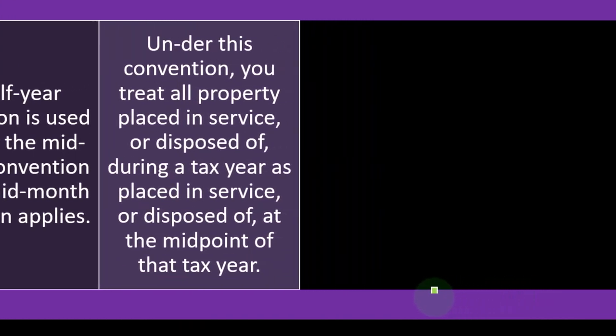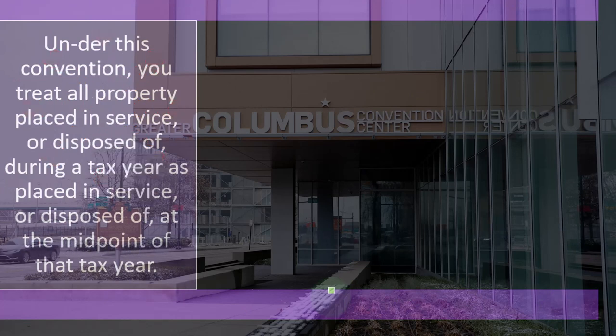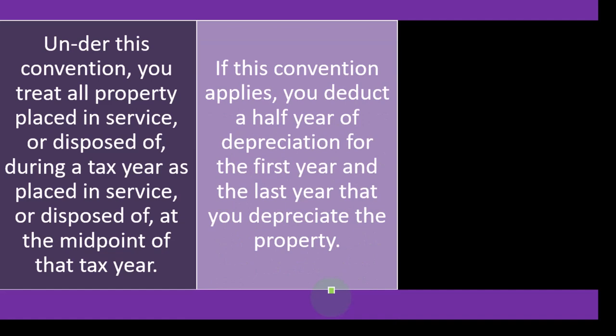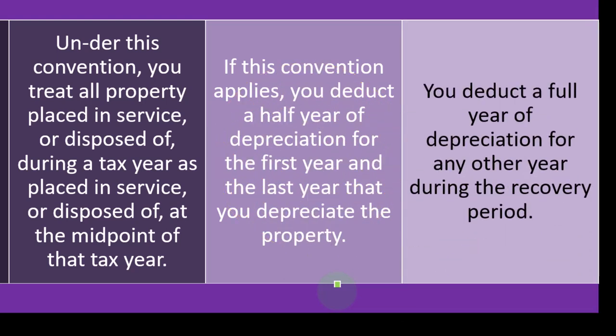The half-year convention is used if neither the mid-quarter convention nor the mid-month convention applies. It's a bit backwards the way it's structured, because the half-year convention is kind of the default generally — unless purchases at the end of the quarter push you into the mid-quarter convention. Real estate uses the mid-month convention because it's the big stuff. Under the half-year convention, you treat all property placed in service during a tax year as placed in service at the midpoint of that year. You deduct a half-year of depreciation for the first and last years, and a full year for any other year during the recovery period.